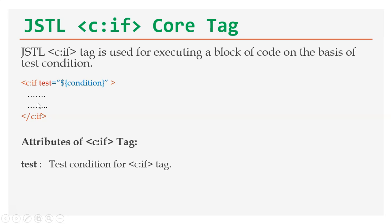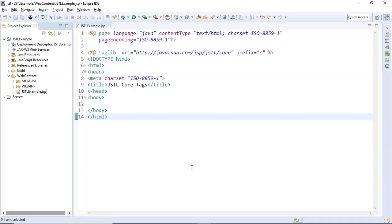Otherwise, if this condition evaluates to false, then this block of statements will be skipped. There is only one attribute available to the `c:if` tag, that is `test`, and this `test` attribute is provided with the test condition. So let's dive into the code.